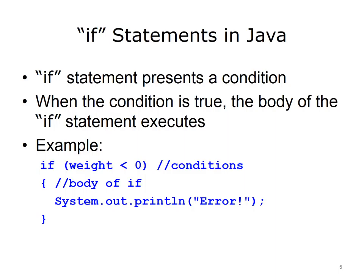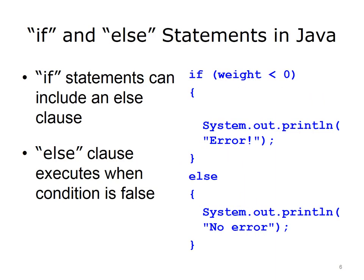When the condition is false — in this case if weight is greater than or equal to zero — the body of the if statement is skipped. Note that there is no semicolon after the condition of an if statement. If statements can also have an else clause that provides the statements that execute when the condition is false. This example has the same condition as the if statement on the previous slide.